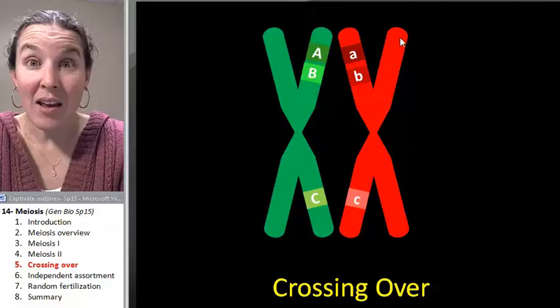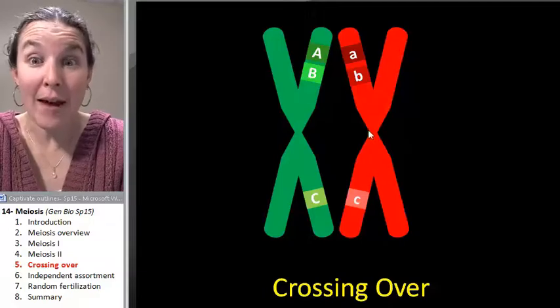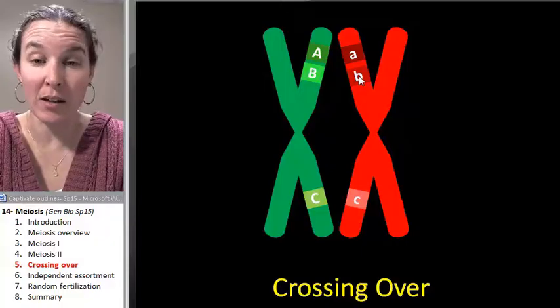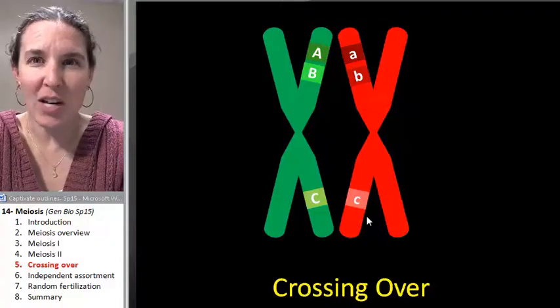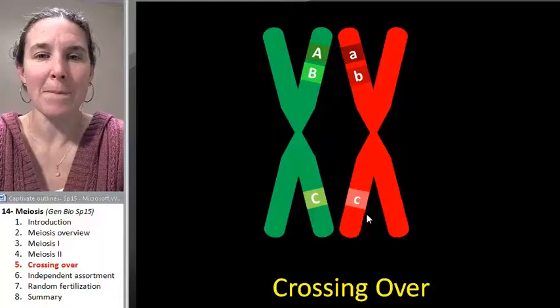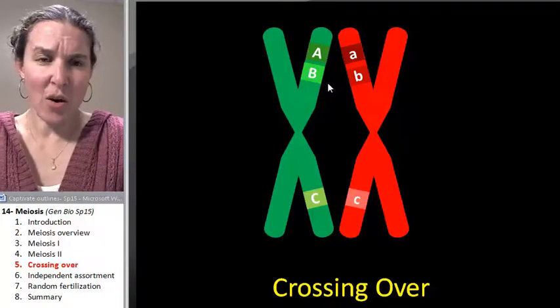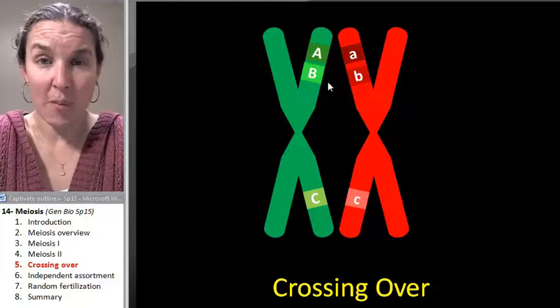The red chromosome could have a big B allele. I could totally just switch this out and make a big B allele. I made them different just to mix things up a little bit, and so that you could visualize that these are all possible options.